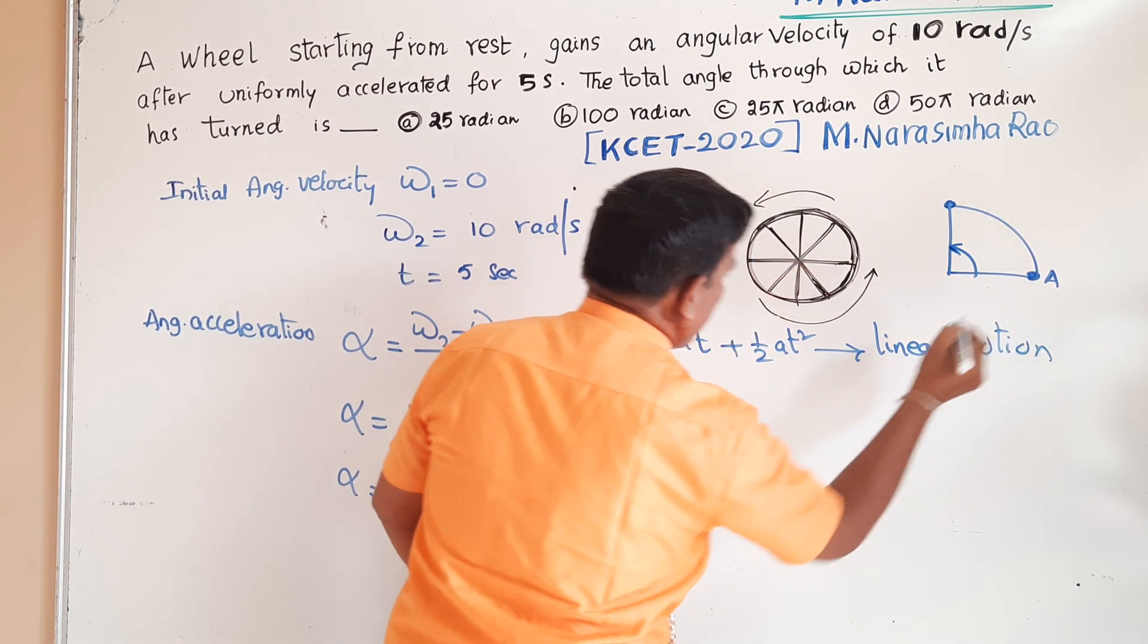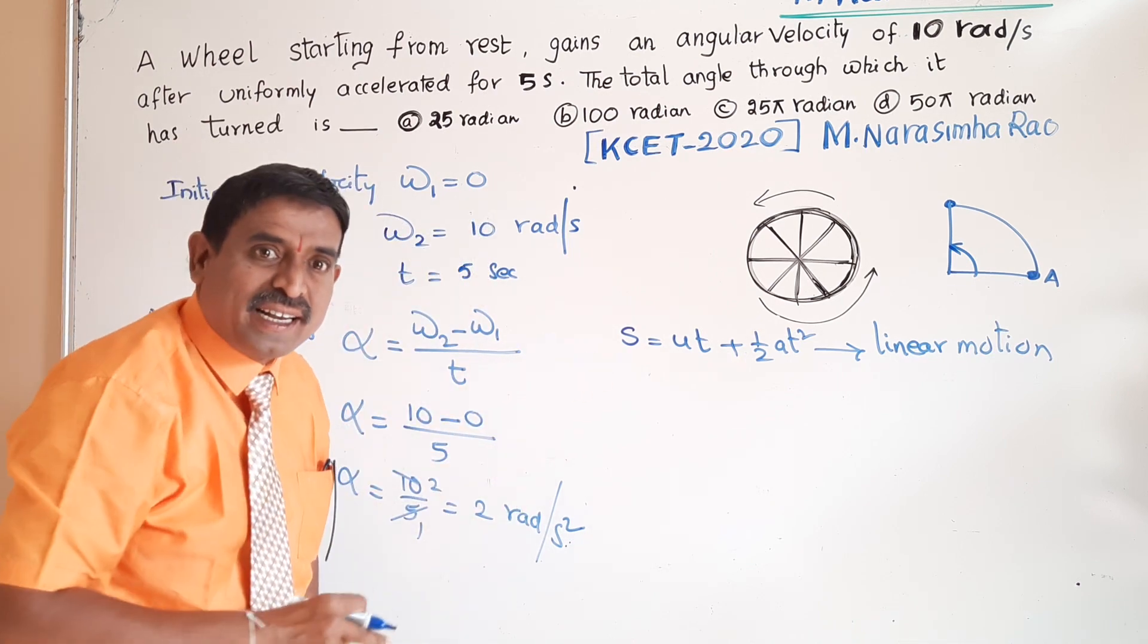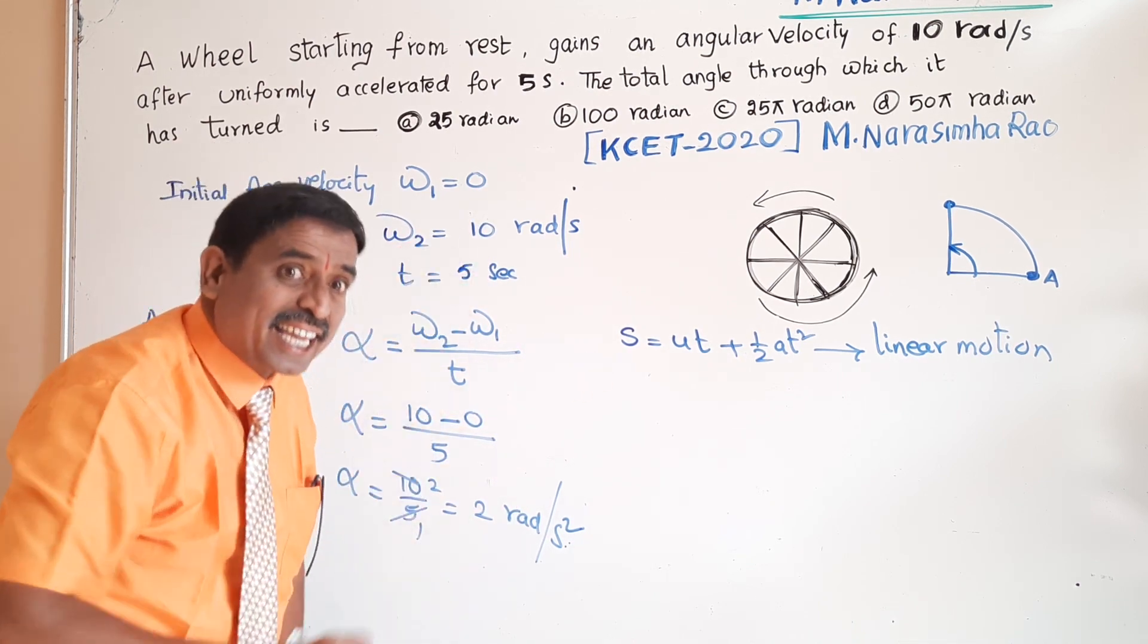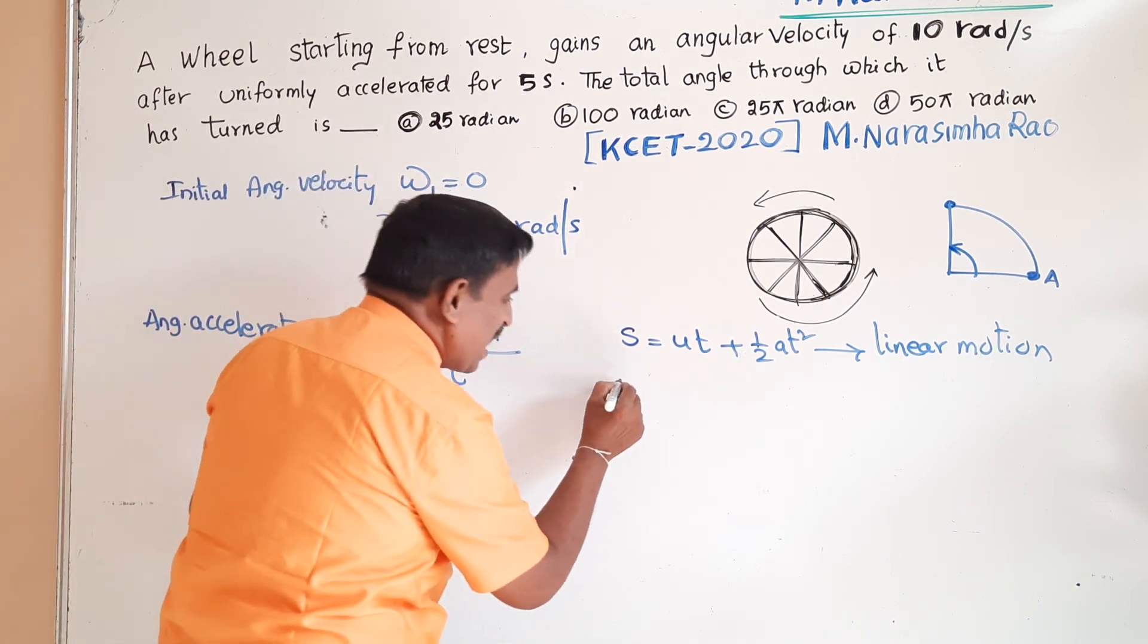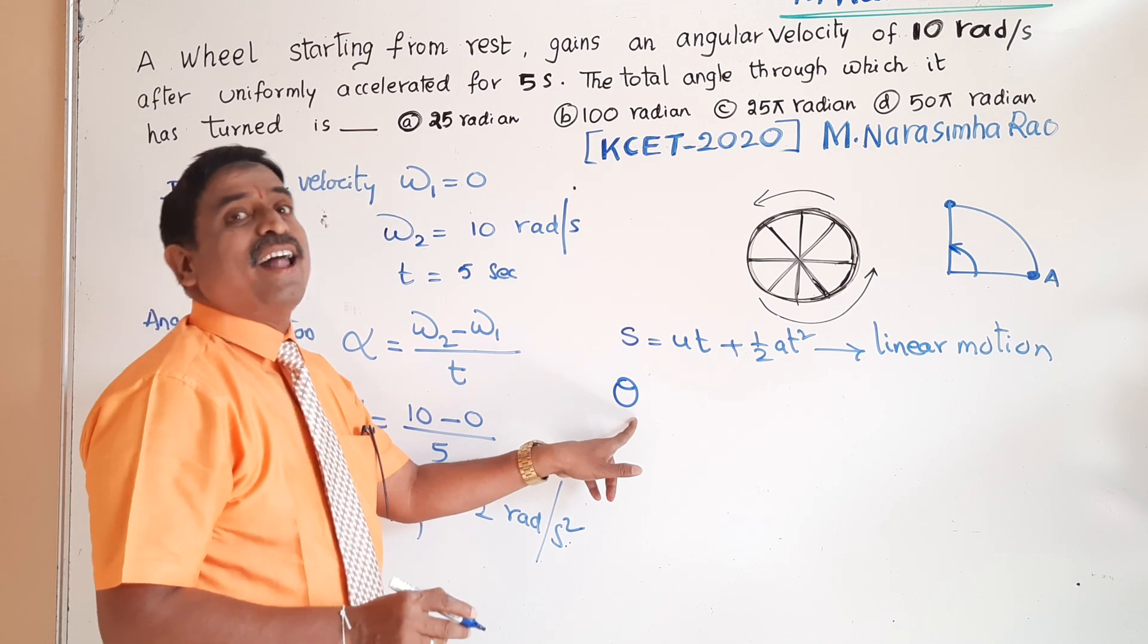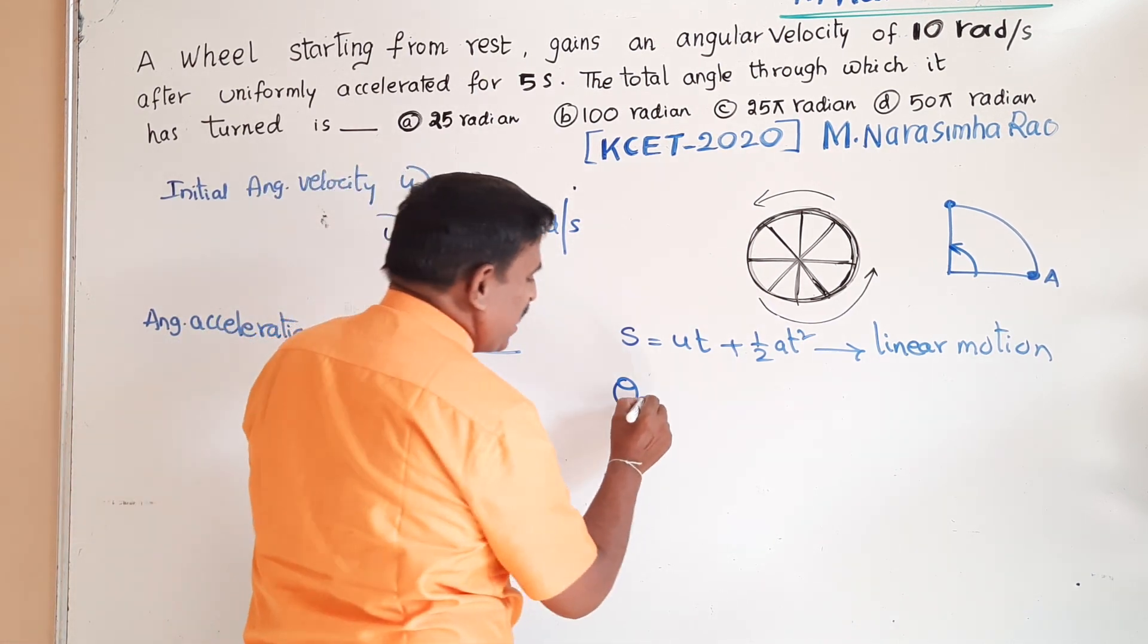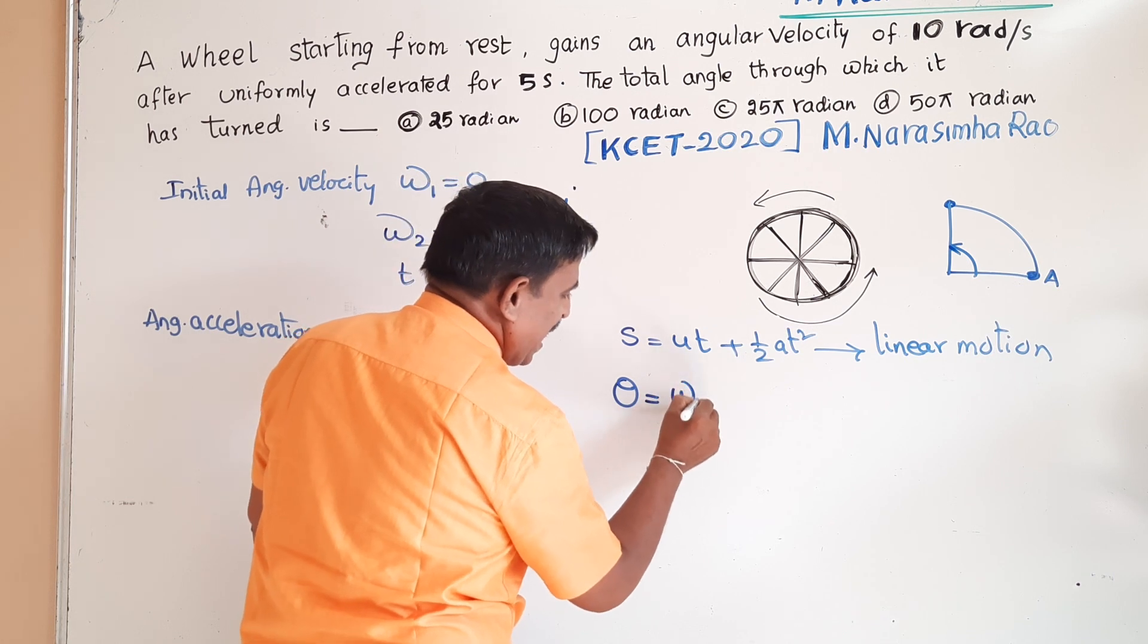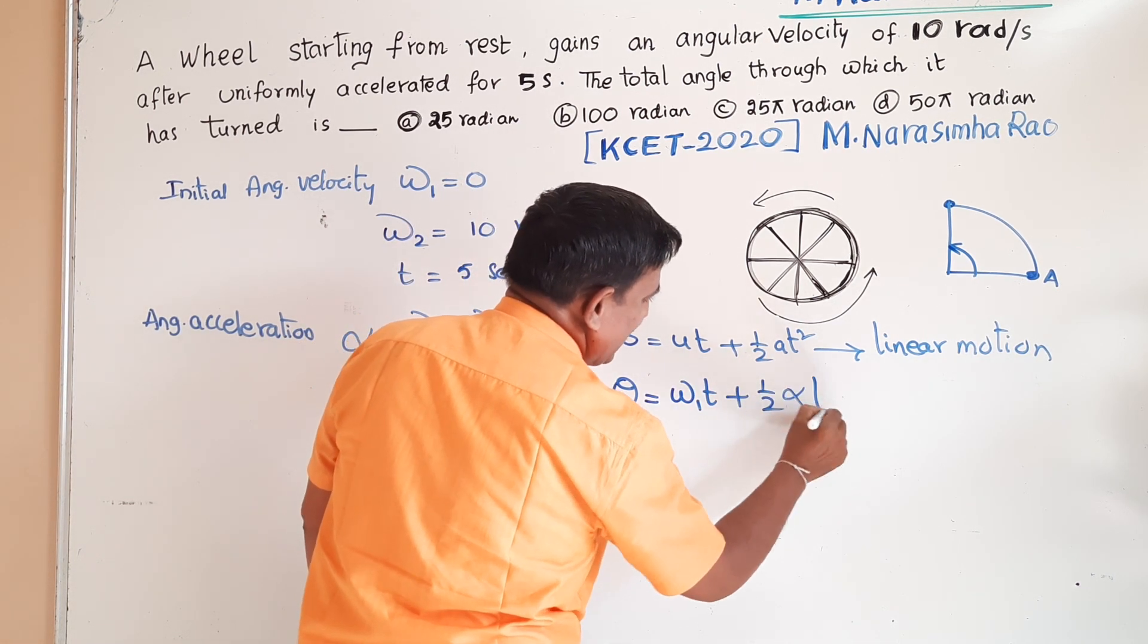In circular motion, we write theta as the angular displacement. It is angular displacement: omega 1 t plus half alpha t square.